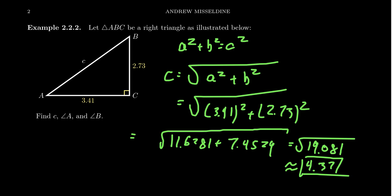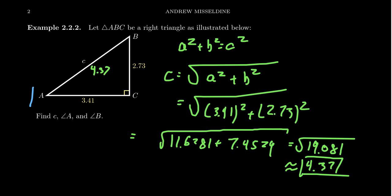If instructions specify a different number of decimal places, follow those. Now, to find angles A and B, we use a trigonometric ratio — whenever an angle is involved, you need a trig ratio. With respect to angle A, we know the opposite side and the adjacent side, so the tangent ratio applies: tangent of A = 2.73/3.41.